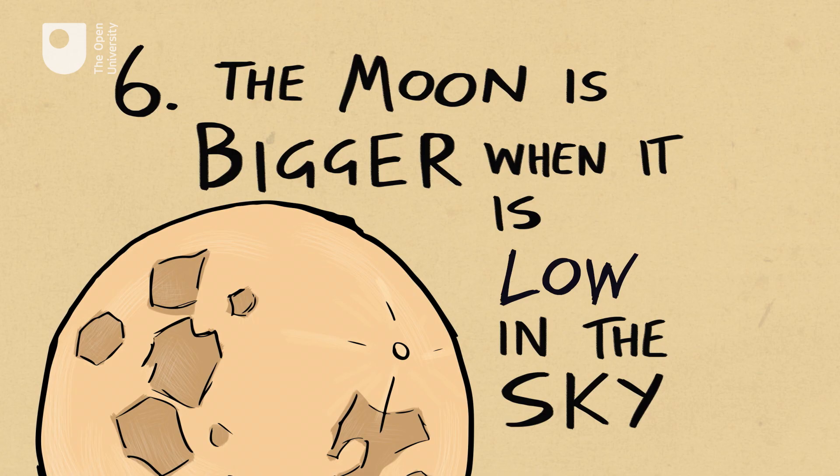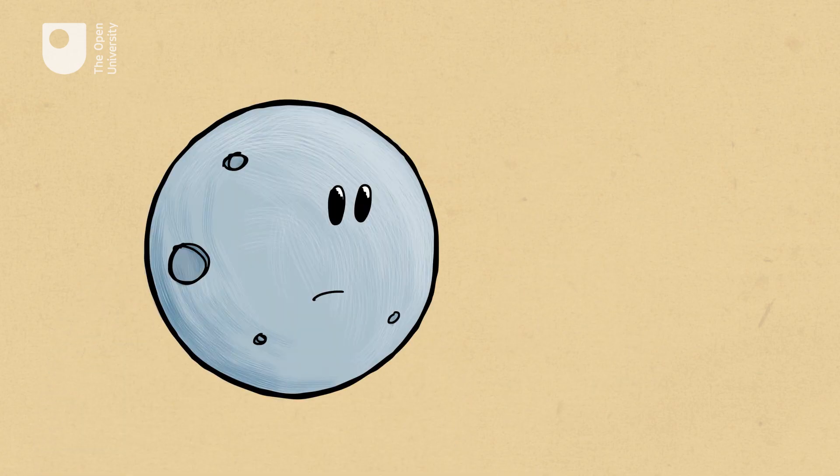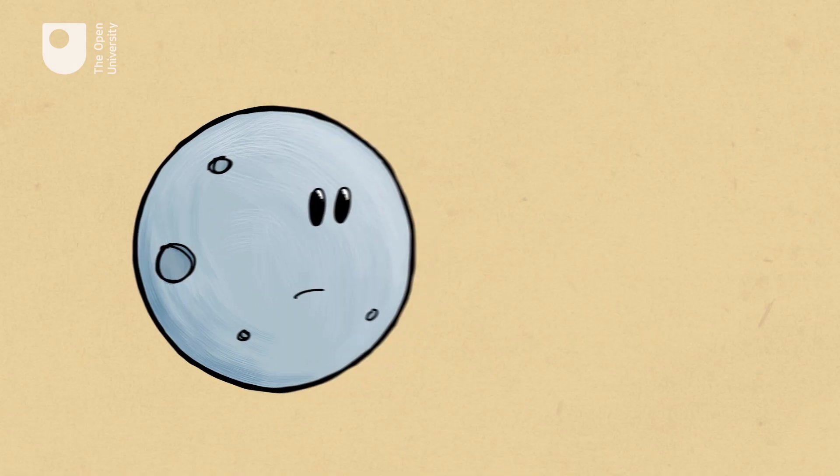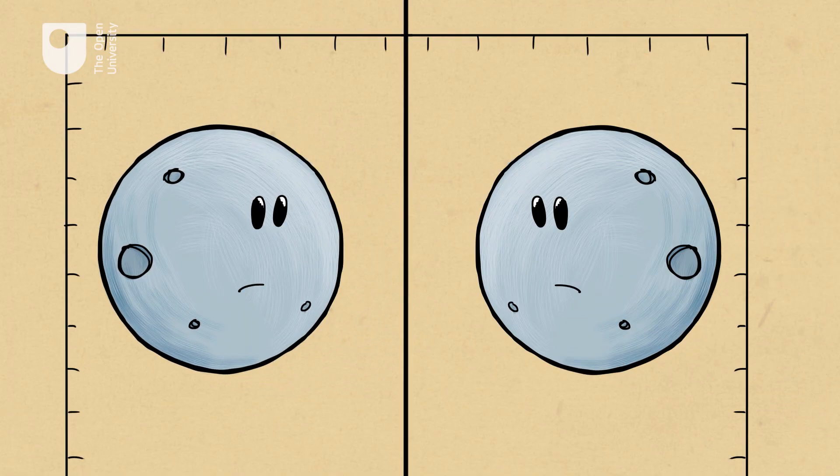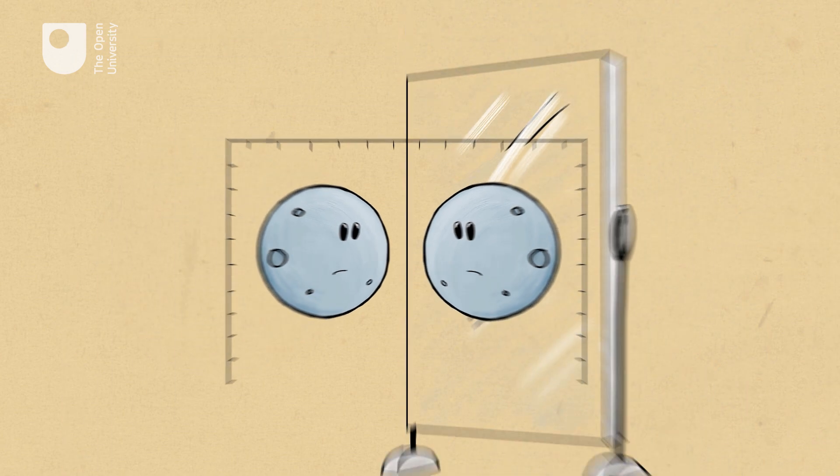6. The Moon is bigger when it is low in the sky. Well, it looks bigger, but if you measure it, it is exactly the same size as when you see it higher in the sky.